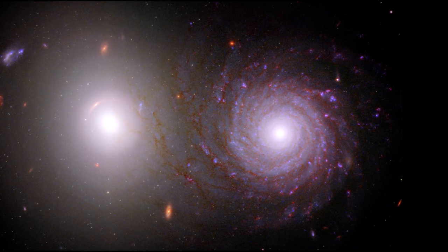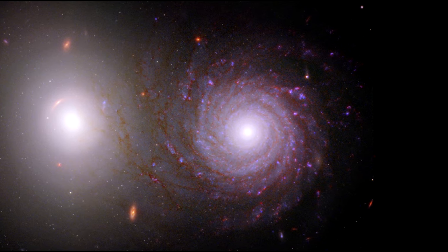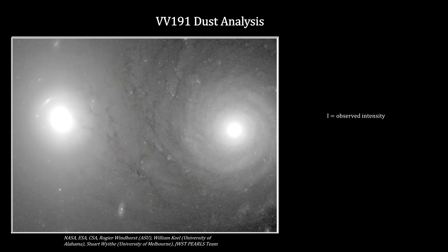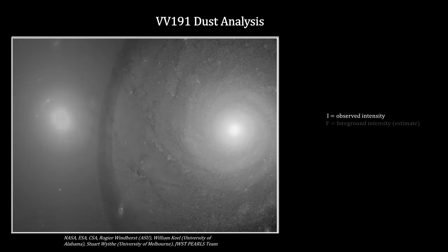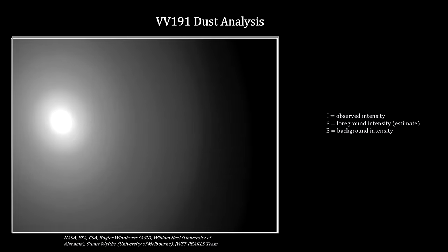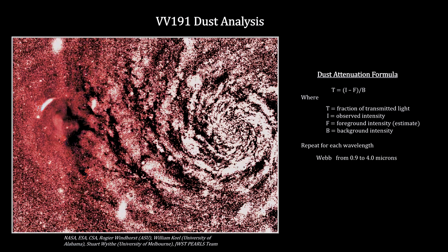This light from the elliptical galaxy suffers extinction as it passes through the dust in the spiral galaxy. Astronomers map the extinction and determine its dependence on the wavelength of the light. The major steps in the dust analysis are: first, the original image is used to determine the observed light intensity; next, a smooth and symmetric model for the foreground spiral figures its light intensity; next, a model for the background elliptical's light intensity is developed from light not passing through the spiral; and last, these models are combined to get the derived light transmission map. This process is repeated for six available light wavelengths from Webb and Hubble.